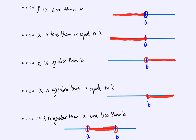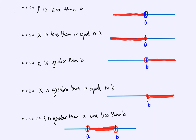In inequalities, we have two basic inequality symbols — this symbol and its reverse. In one direction it represents less than, and the other direction represents greater than. An easy way to remember is that this symbol has a larger side and a smaller side. The smaller side always points to the smaller number, and the larger side always points to the larger number.